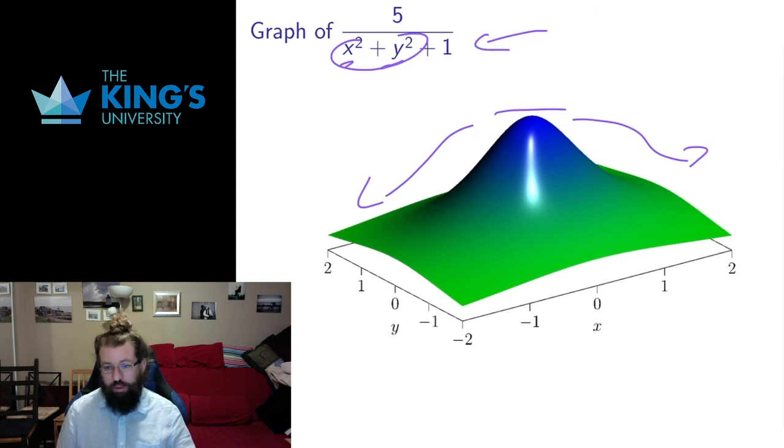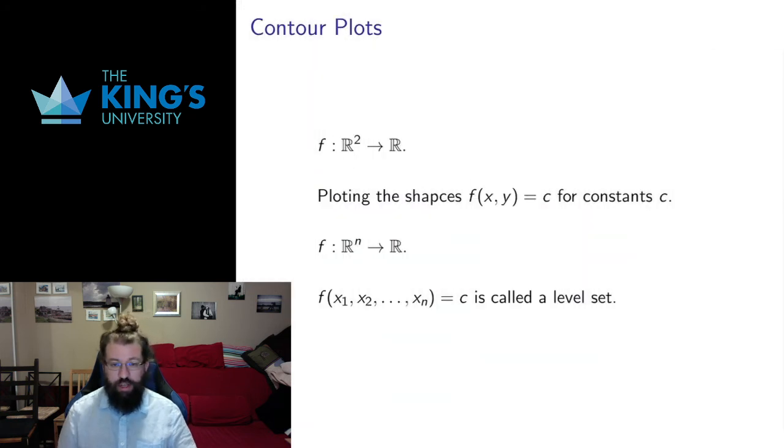Now we can only do this for functions of two variables because as soon as we have functions of more variables we can't actually see the space in which the graph would exist. The graph still exists, we can still perhaps talk about it, but it's no longer a thing that's useful for visualization.